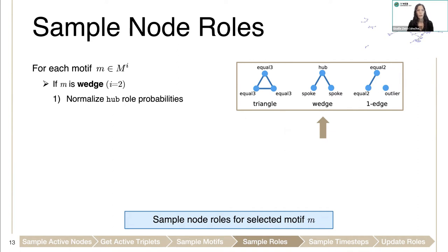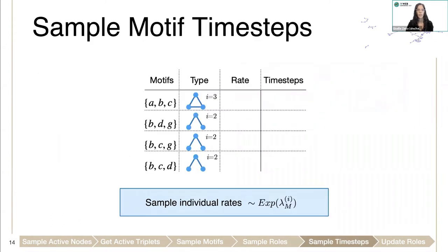In this example, let's assume that we have a wedge motif. We first normalize the hub rule probabilities among the three nodes. Then we sample which node will be the hub, and the other two nodes will have the spoke role.